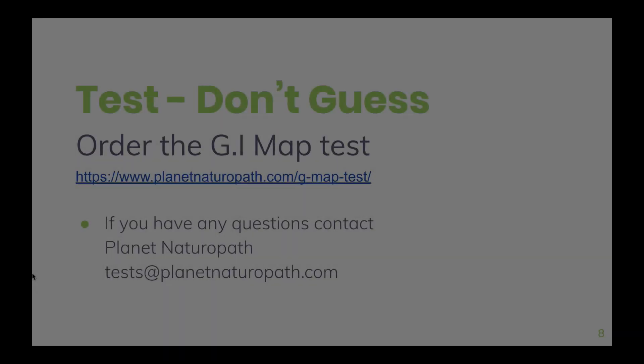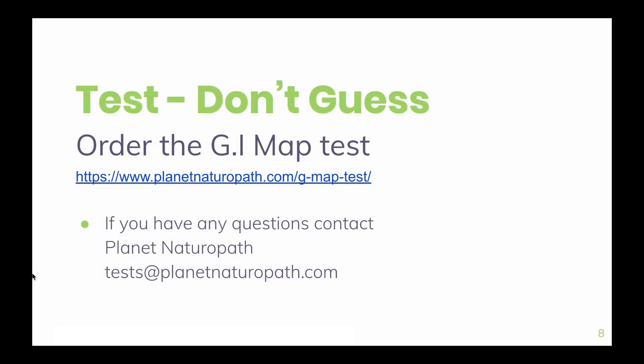There are plenty of natural treatments for Helicobacter, so you don't have to go down the antibiotic pathway. To order the GI MAP test go to planetnaturopath.com. The test can either come with a consultation or without, and the consultation will help you with a treatment plan to get your digestion back on track. If you have any questions just send us an email at test@planetnaturopath.com.